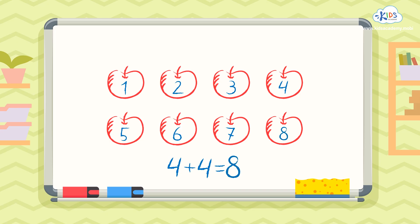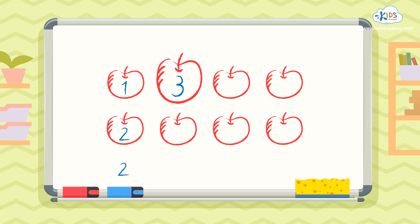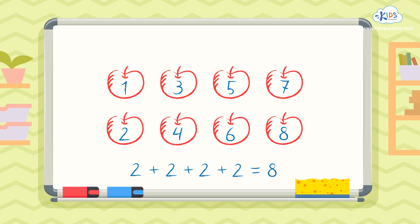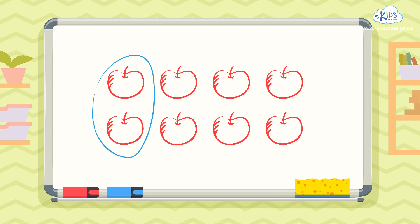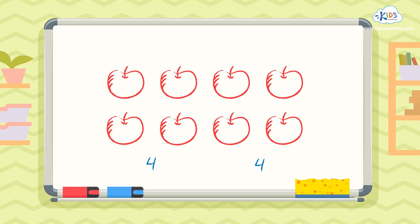There's another way to make eight easily from this picture. Let's count how many in each column up and down. One, two — that's two in the first column. Three, four — that's another two. Five, six — another two. Seven, eight — and another two. We already know the answer is eight because we counted up to eight, but let's just check anyway. Two plus two equals four, and two plus two equals four again. Now we have two fours. We can add four plus four to get the total. Four plus four equals eight.